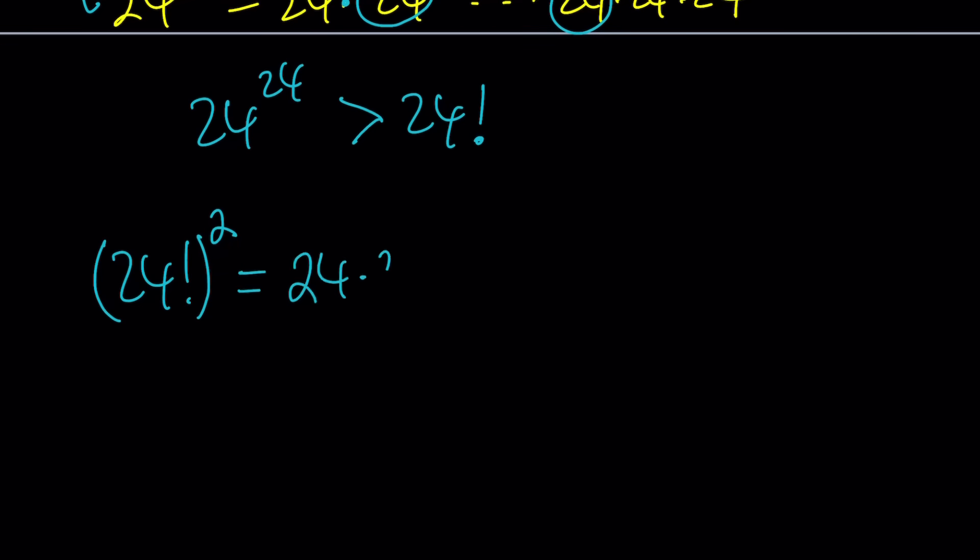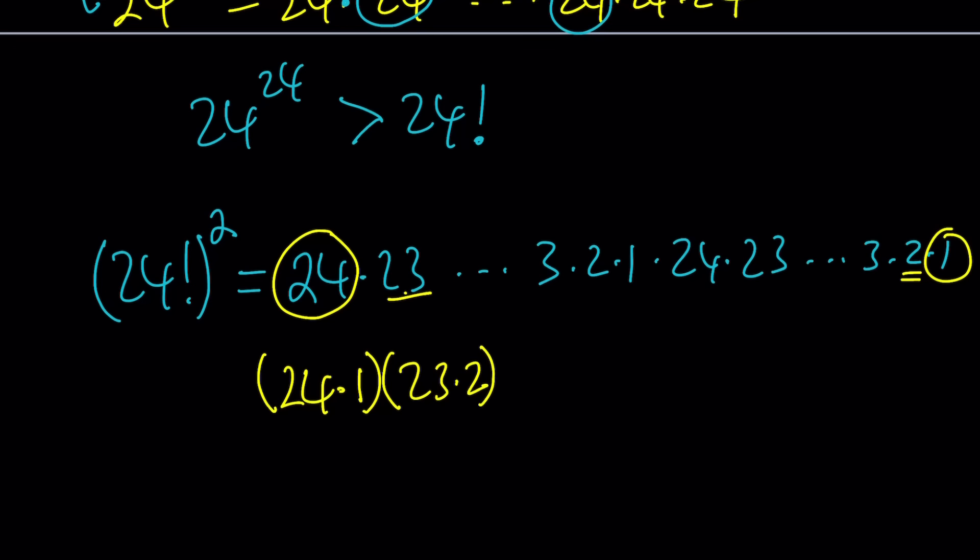Let's expand 24 factorial squared. First of all, I'm going to write it as 24, 23, dot dot dot, 3, 2, 1, and I'm just going to copy the same thing, 3, 2, 1. I have the same thing twice. Now, I want to pair these up in an interesting way. Take the first term and the last term, and write it as 24 times 1. Make it a group. Then take the 23, and multiply by 2. That's going to be another group, and we'll continue this manner all the way down to 1 and 24.